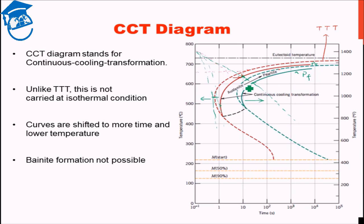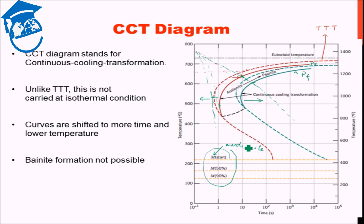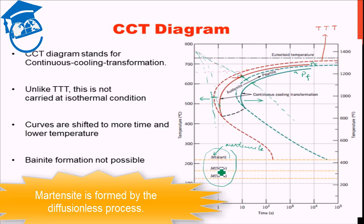Now, in addition to the pearlite curves and the shifted curves, here we see some lines drawn here. M start, M 50%, M 90%. M here represents martensite. We'll visit this in the next lecture in much more details. But just to give you a glimpse, martensite is formed by diffusionless process. Martensite does not require diffusion to be formed. Thereby martensite formation takes place at really low temperature.